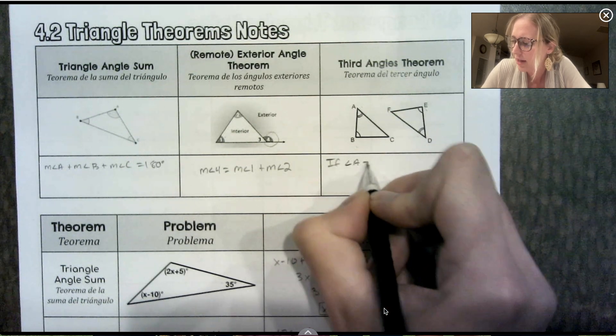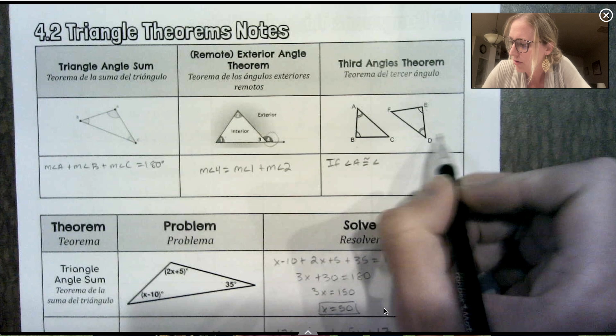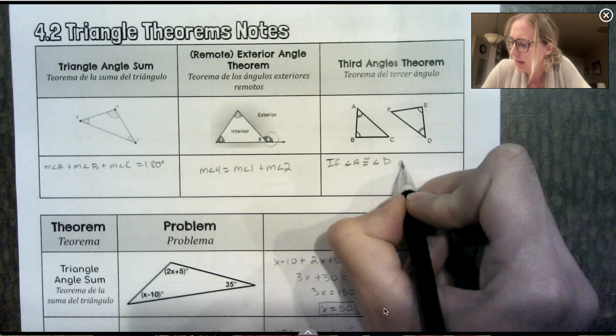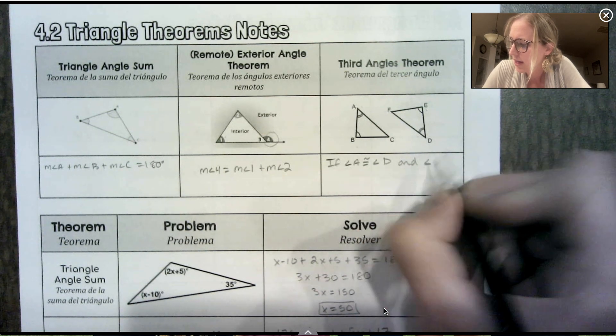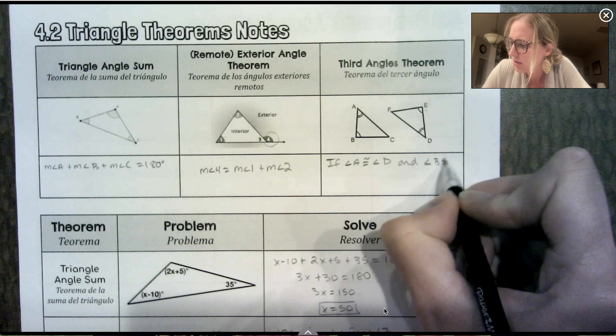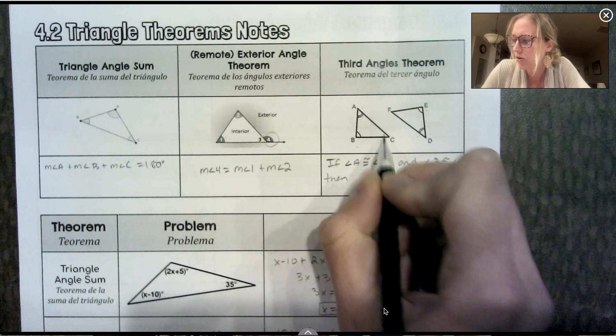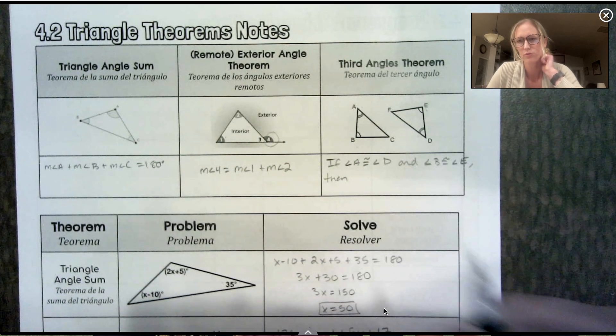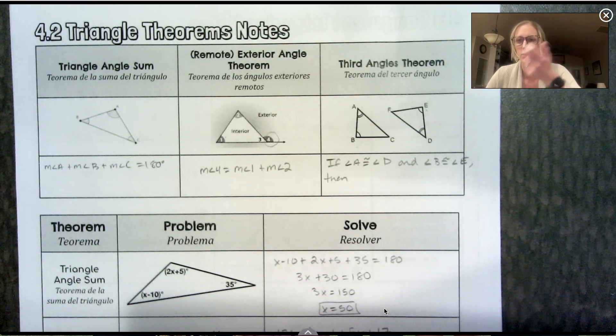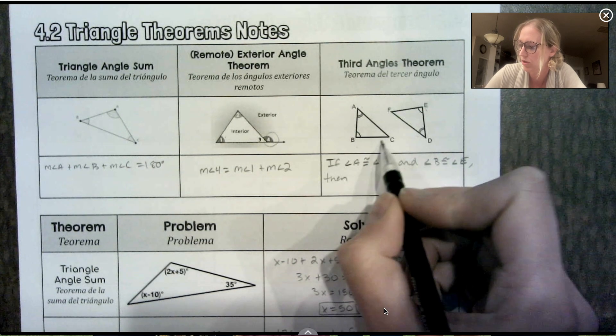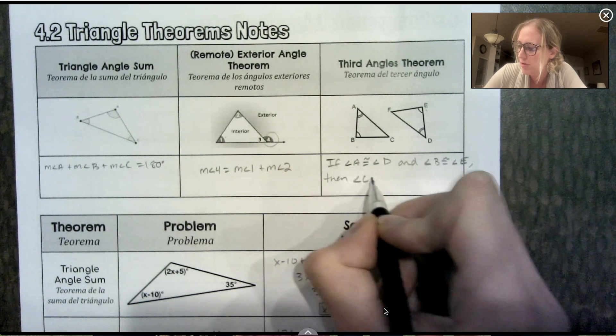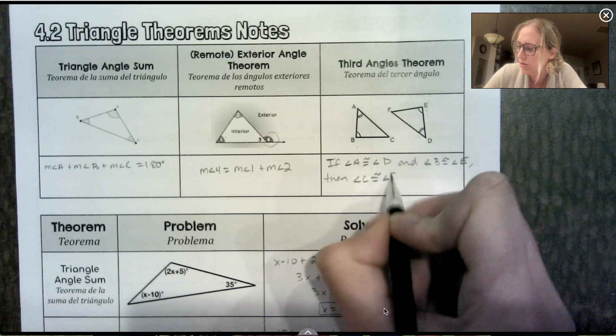So if angle A is congruent to angle D and angle B is congruent to angle E, then the third angle must also be congruent. So if two angles are congruent, that automatically lets us know the third one is congruent. So angle C in this case must be congruent to angle F.